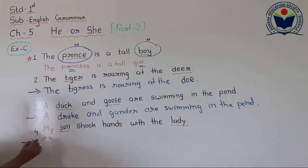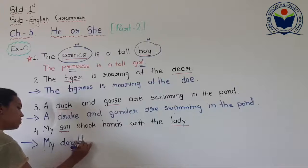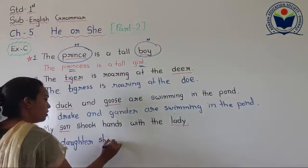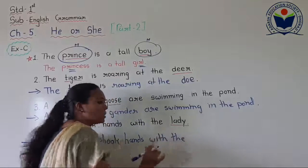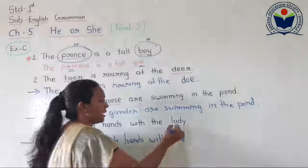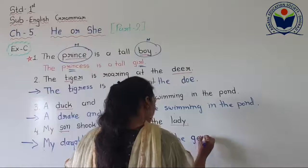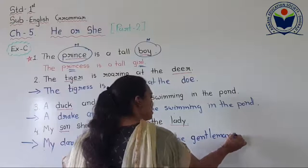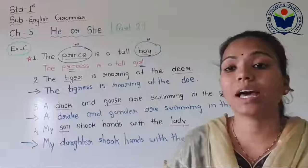Number four: 'My son shook hands with the lady.' Son and lady are underlined. Son changes to daughter — D-A-U-G-H-T-E-R — and lady changes to gentleman — G-E-N-T-L-E-M-A-N. The sentence becomes: 'My daughter shook hands with the gentleman.' We have completed four sentences. Very good.